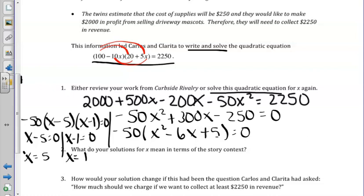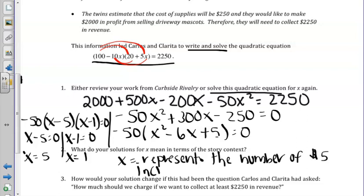So then we're asked, what do our solutions mean in terms of the context of the story? Well, the x represents the number of $5 increments in the price for the driveway mascots.